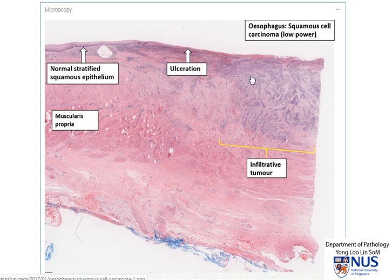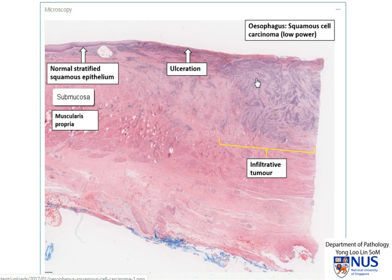There is ulceration, and there are these islands of malignant squamous cells that I'm outlining here, that are coming down and infiltrating into the submucosa and into this pink layer, which is the muscularis propria.